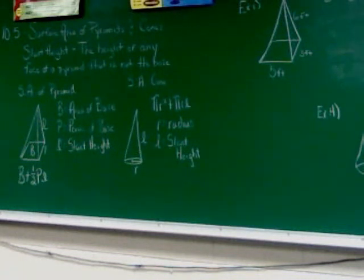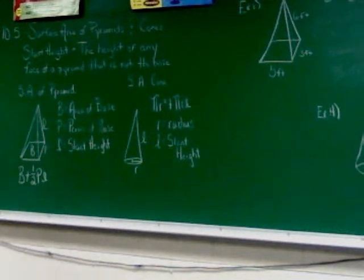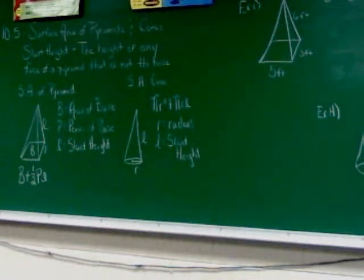A cone actually has a slant height too. The slant height is just the height of the side — not the height straight down, but the height of the side of the cone.